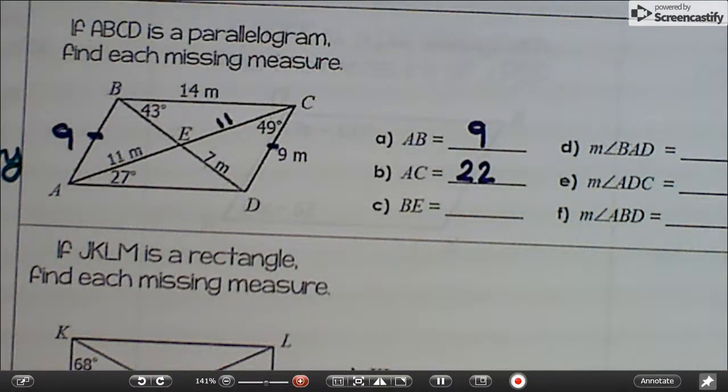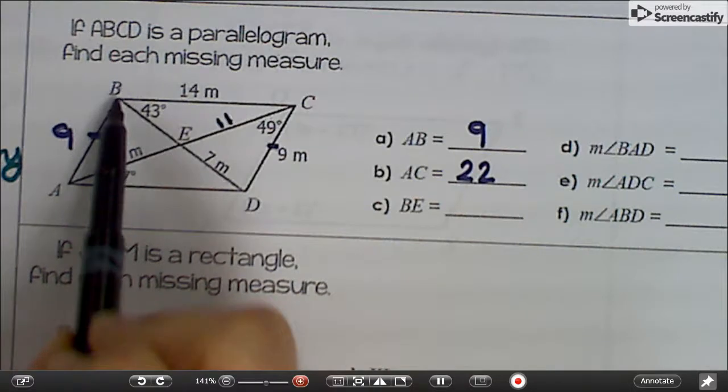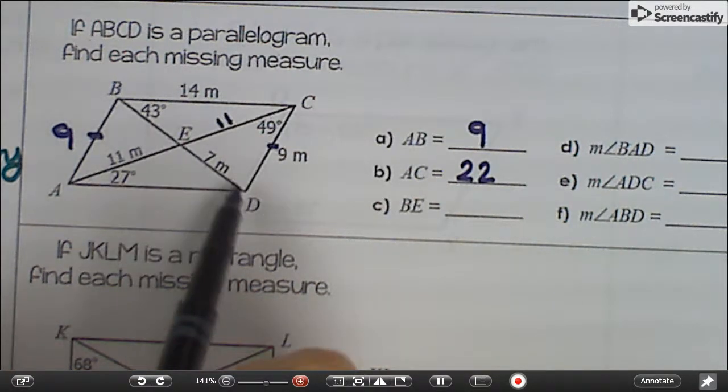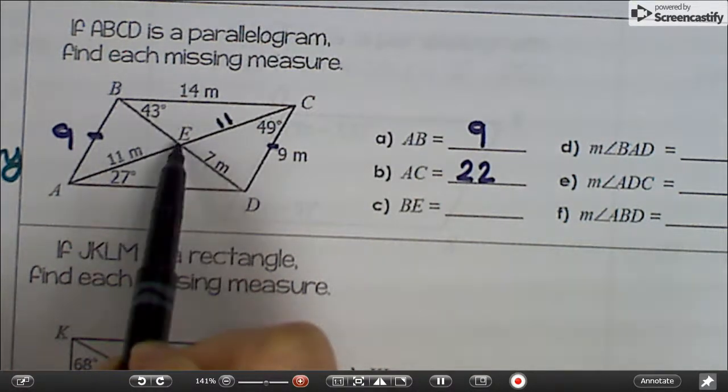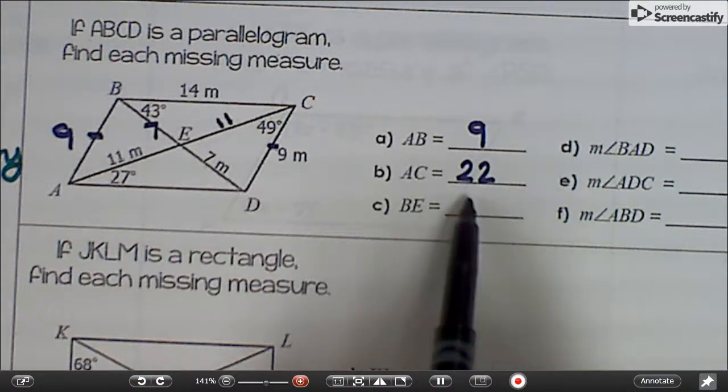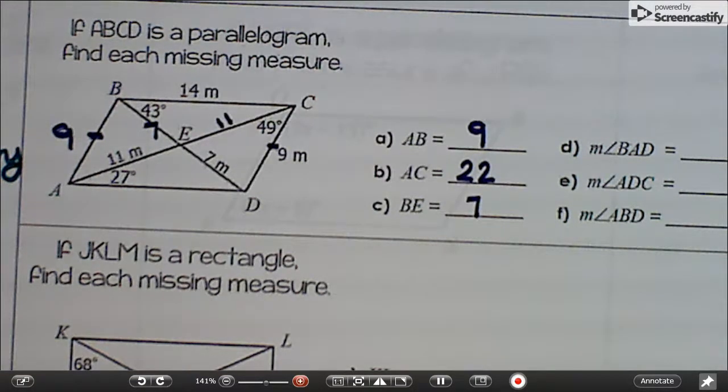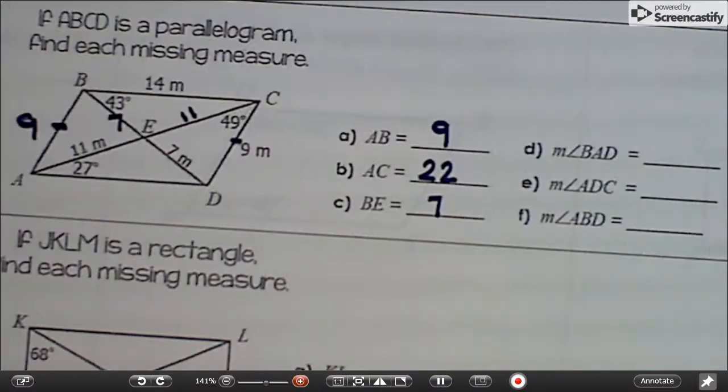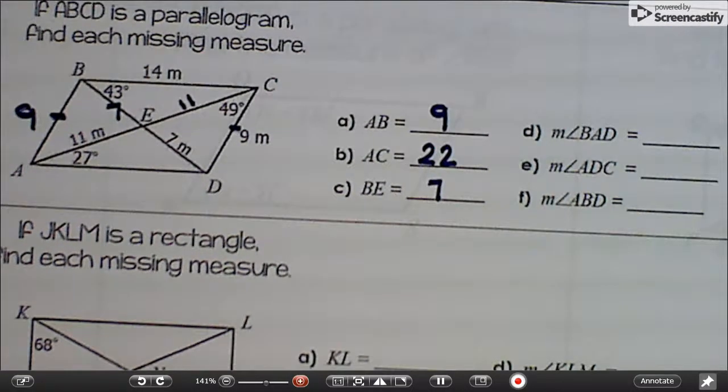And BE, from here to the center, would have to be the same as this for the same reason. In a parallelogram, diagonals bisect each other. So that's 7. All right, that's all the sides. Now let's look at the angles. Well, it's not all the sides, but it's all the sides they're asking for.